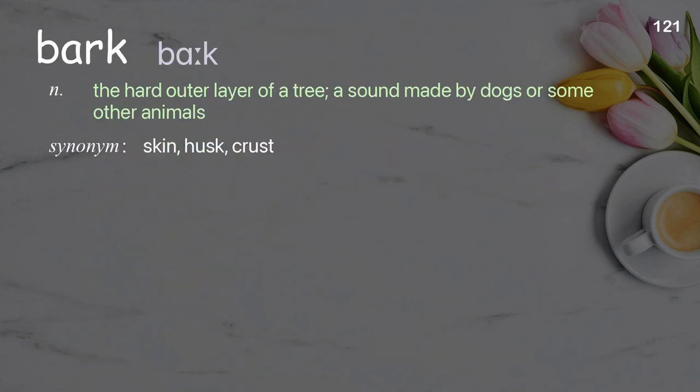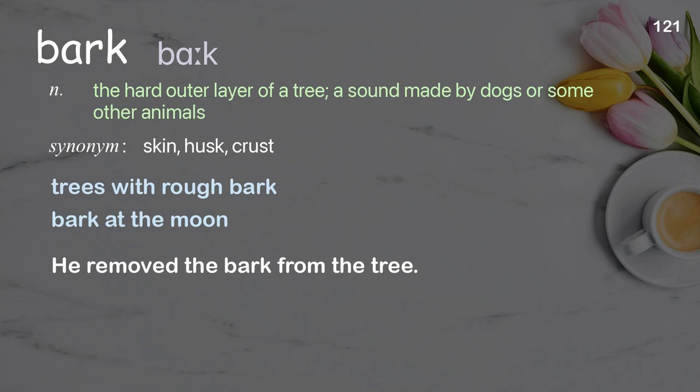Bark: The hard outer layer of a tree; also a sound made by dogs or some other animals. Examples: Trees with rough bark. Bark at the moon. He removed the bark from the tree.